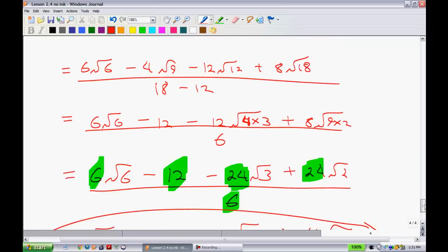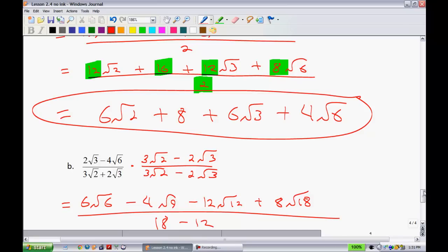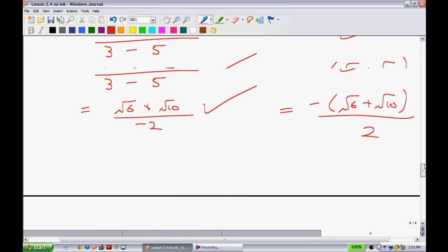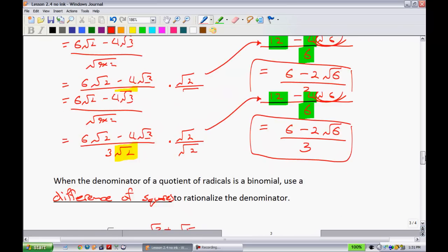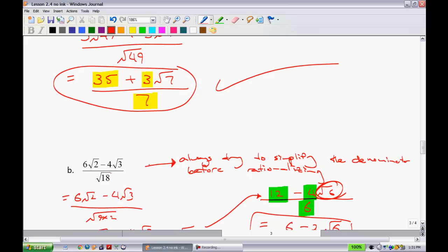Alright, so rationalizing it on there, something new that you learned about today. When you have the denominator, always multiply it by, when you have two terms, always multiply it by whatever its different square will be. When you have just a single term, let's see, one like so right here, the root 18, simplify it if you can, and then just multiply by whatever you have right there.